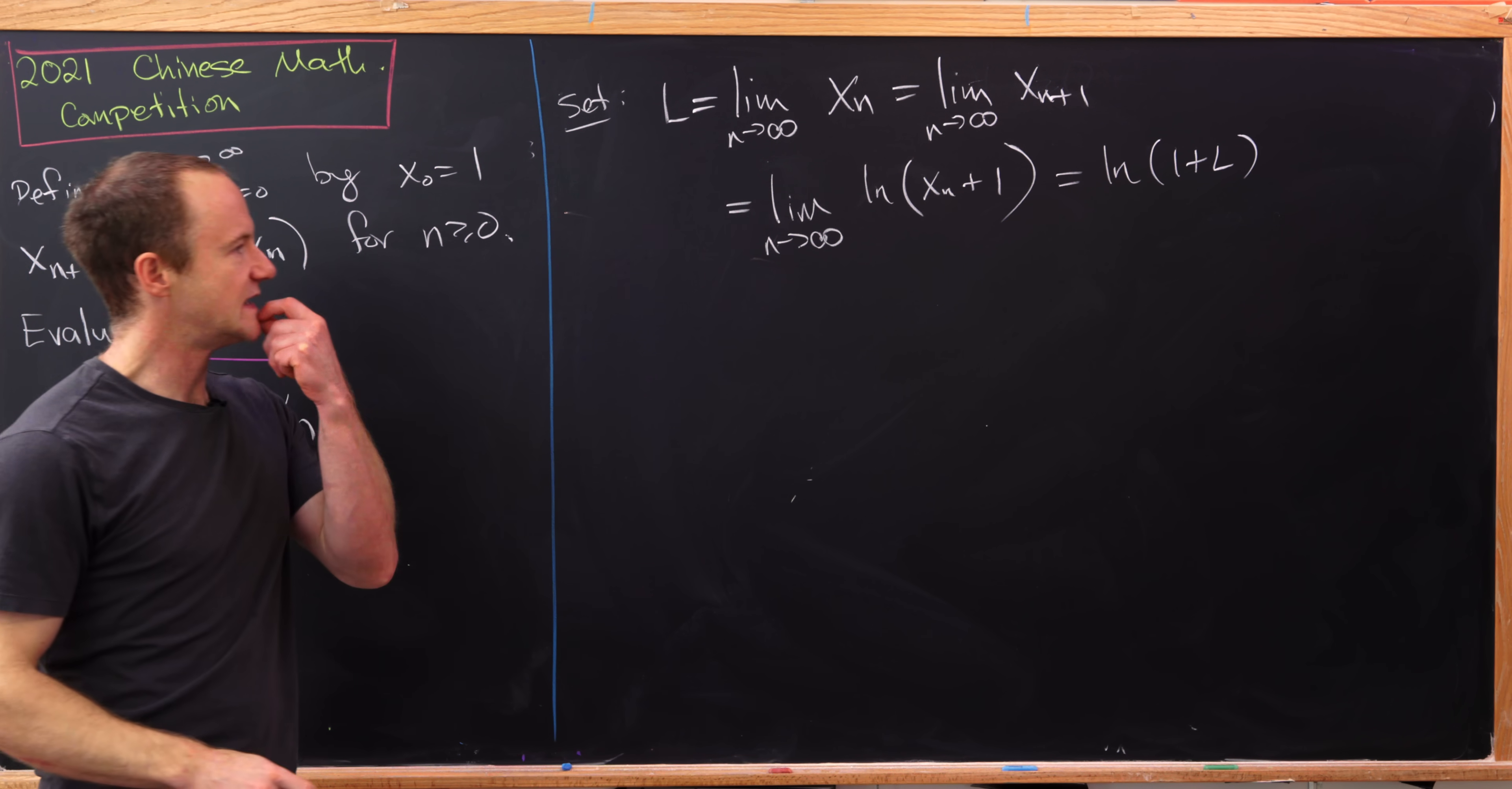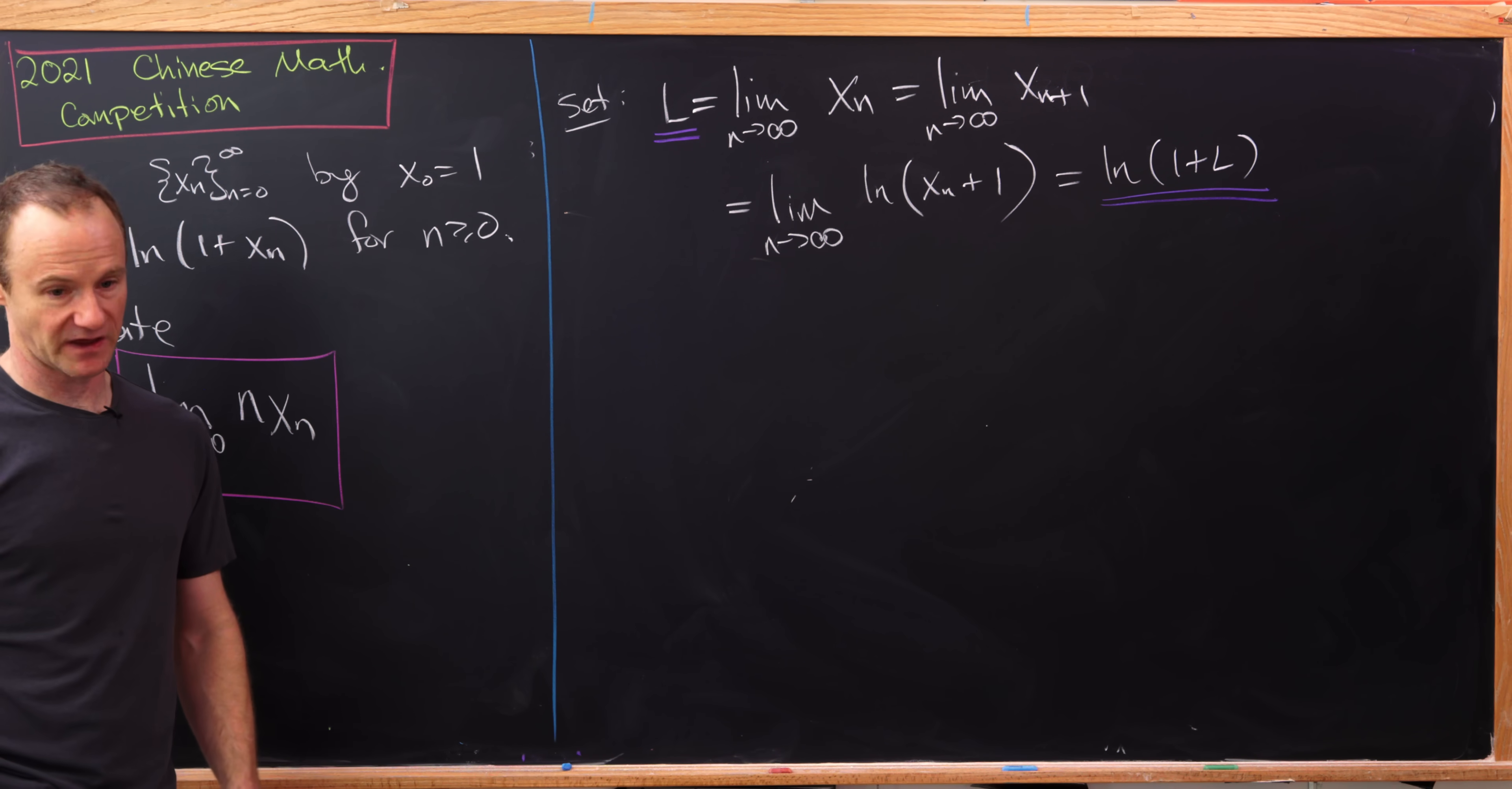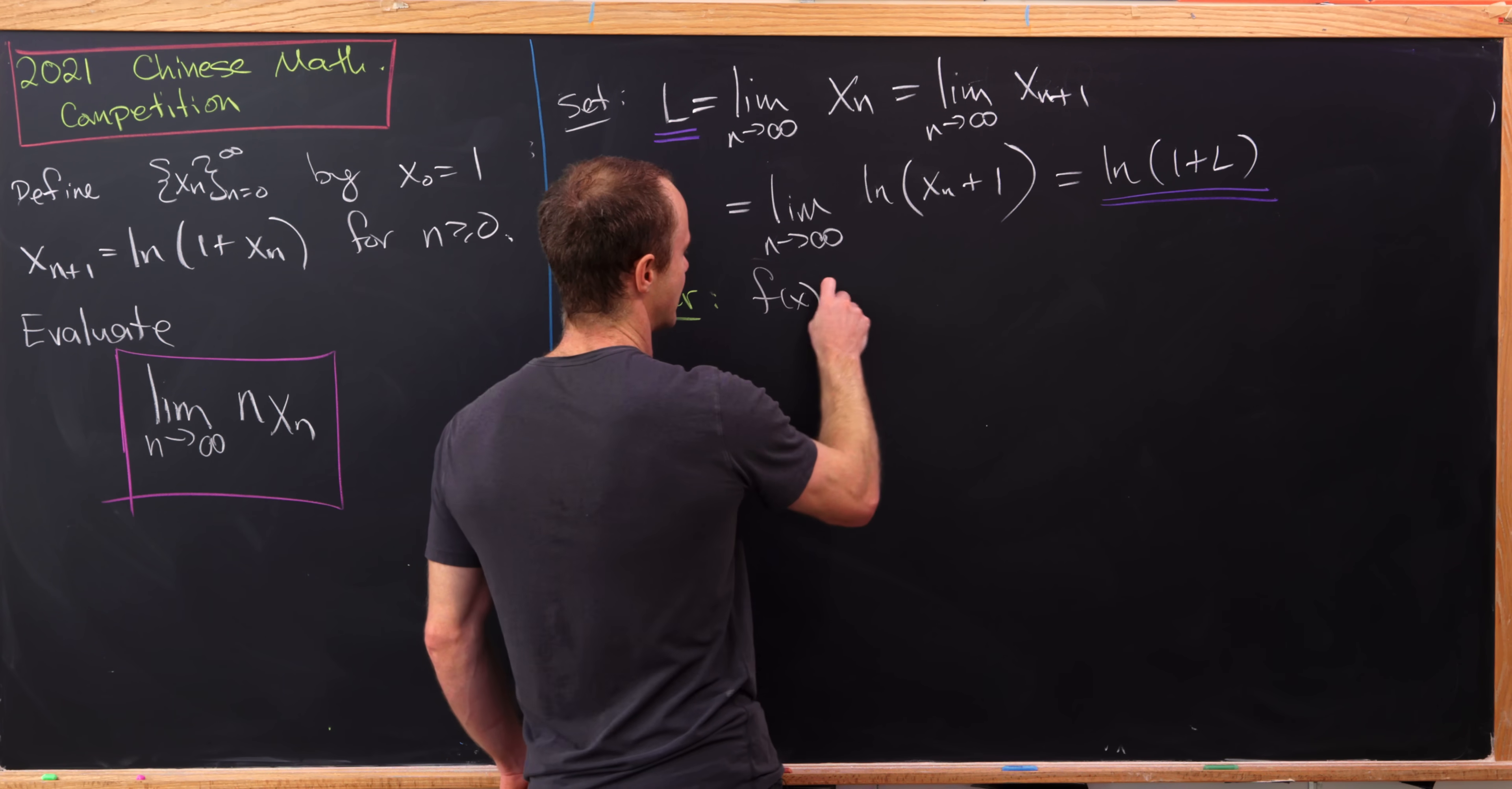But now we simply need to solve the equation L equals the natural log of 1 plus L, which is in fact a little bit trickier than you might think. So let's consider the following function, essentially the difference in the two sides of this equation, but with a variable.